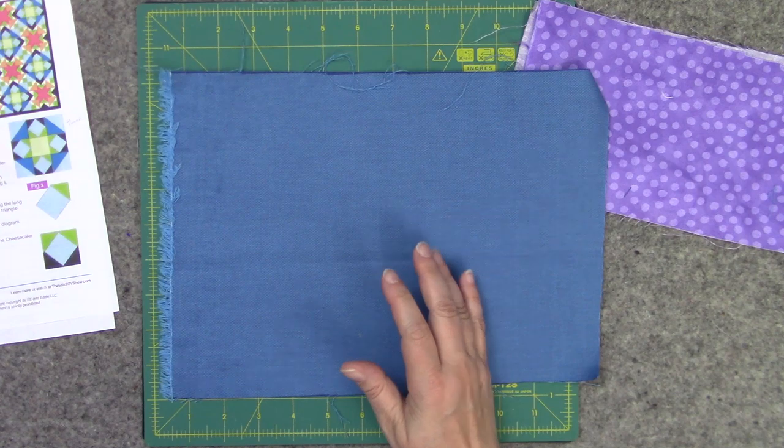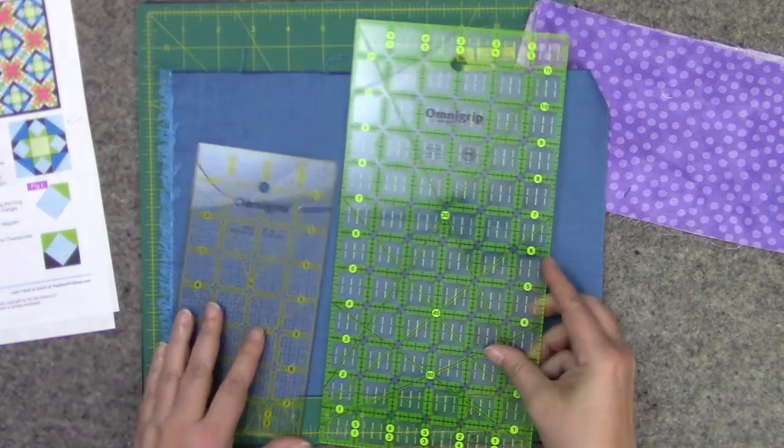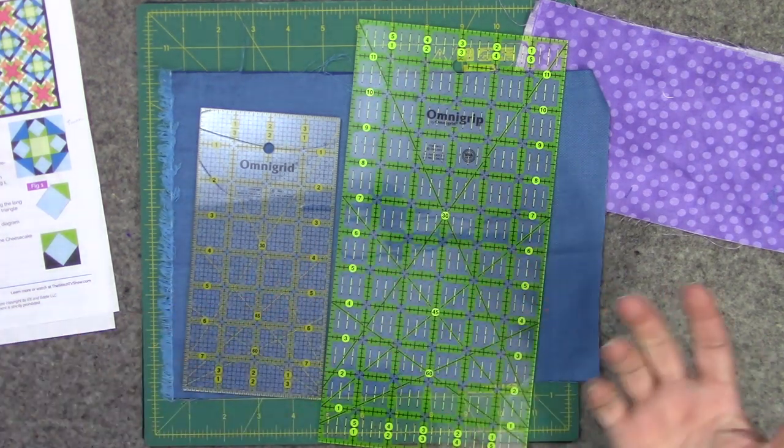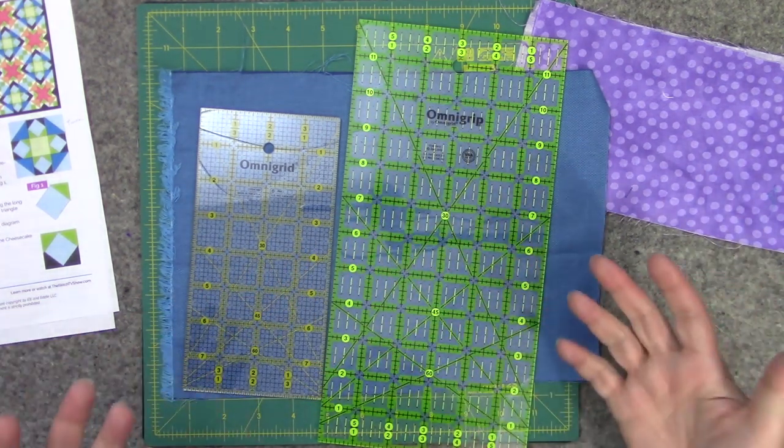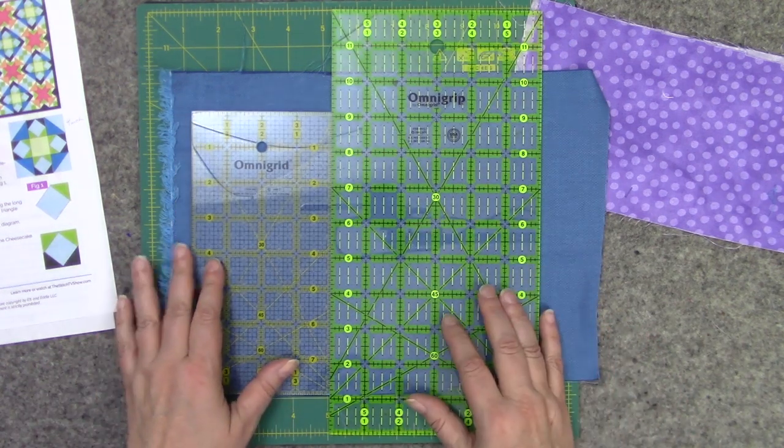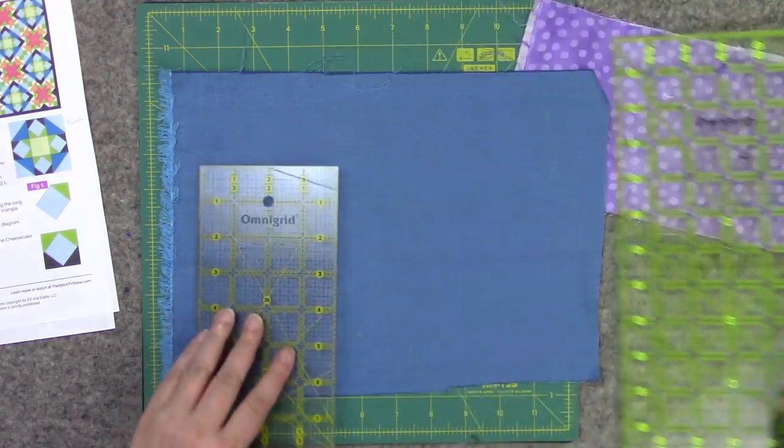So I thought I would just do a quick overview explaining how to measure five-eighths, you know, sometimes if you're not used to reading a ruler then that can be frustrating.